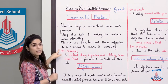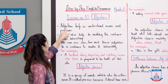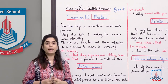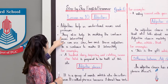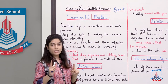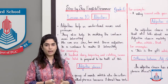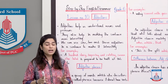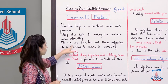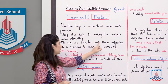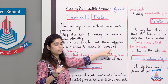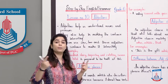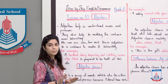Adjective definition — I will read it in three phases so you will understand. Adjectives help us understand nouns and pronouns. They also help us in making the sentence more interesting. If we write nouns and pronouns, we can use one, two, or three adjectives in a sentence to make it more interesting. In one sentence, one noun or pronoun, we can define one, two, or three adjectives.